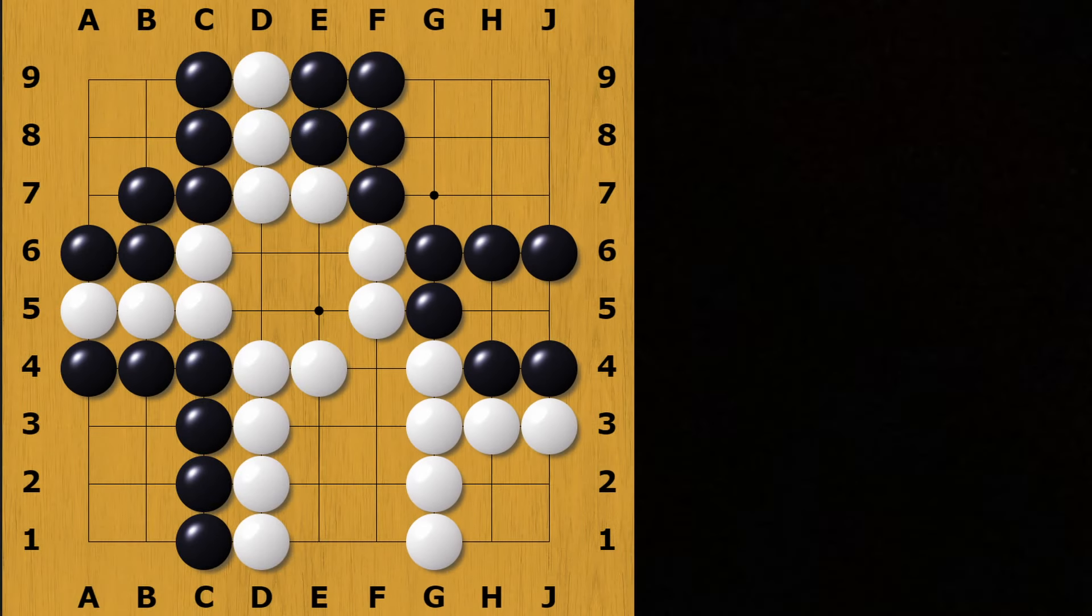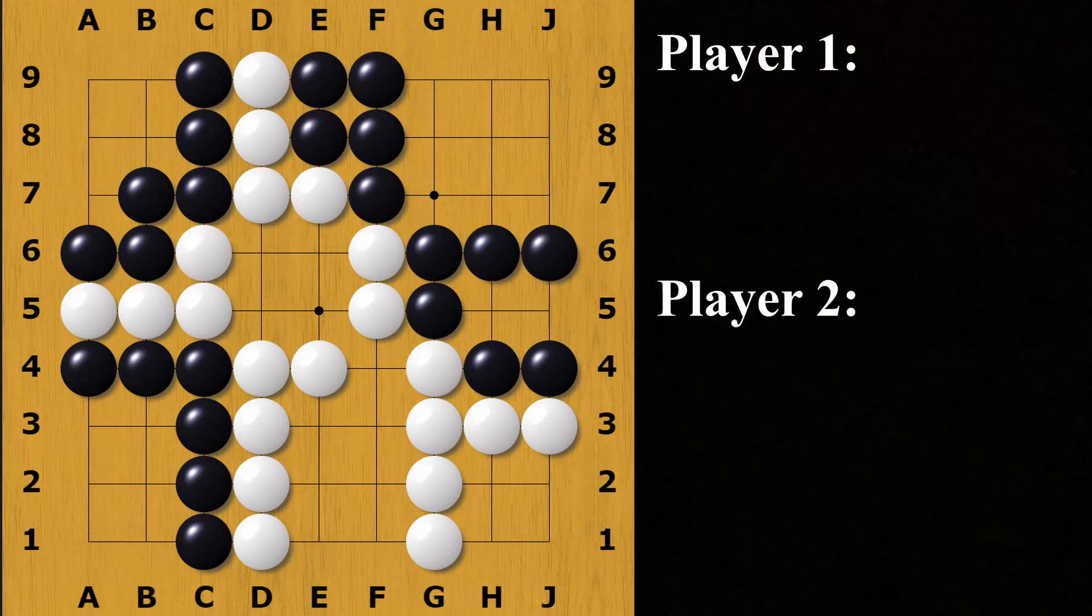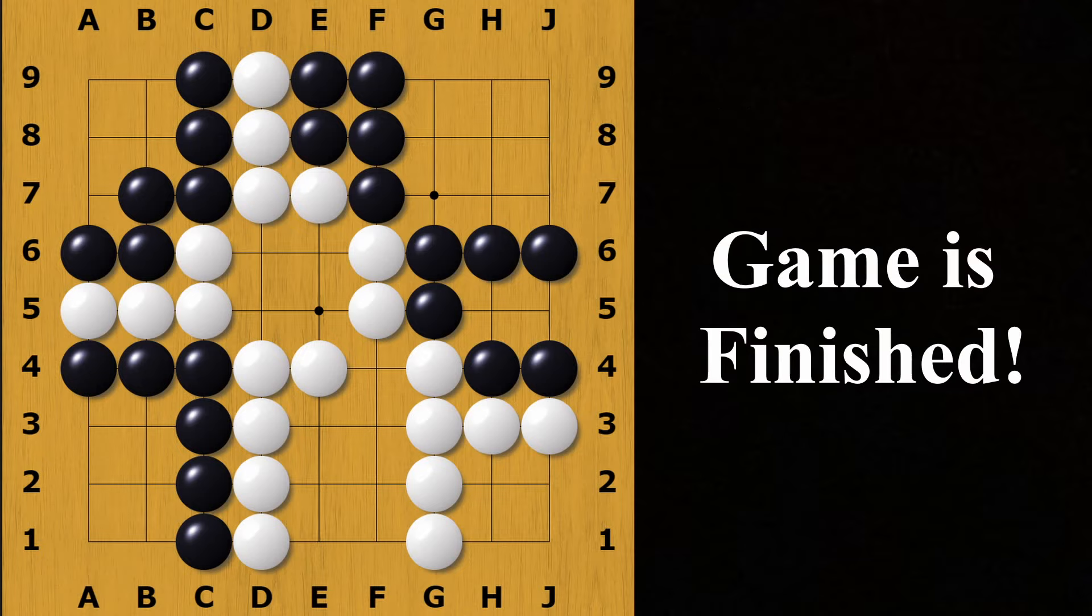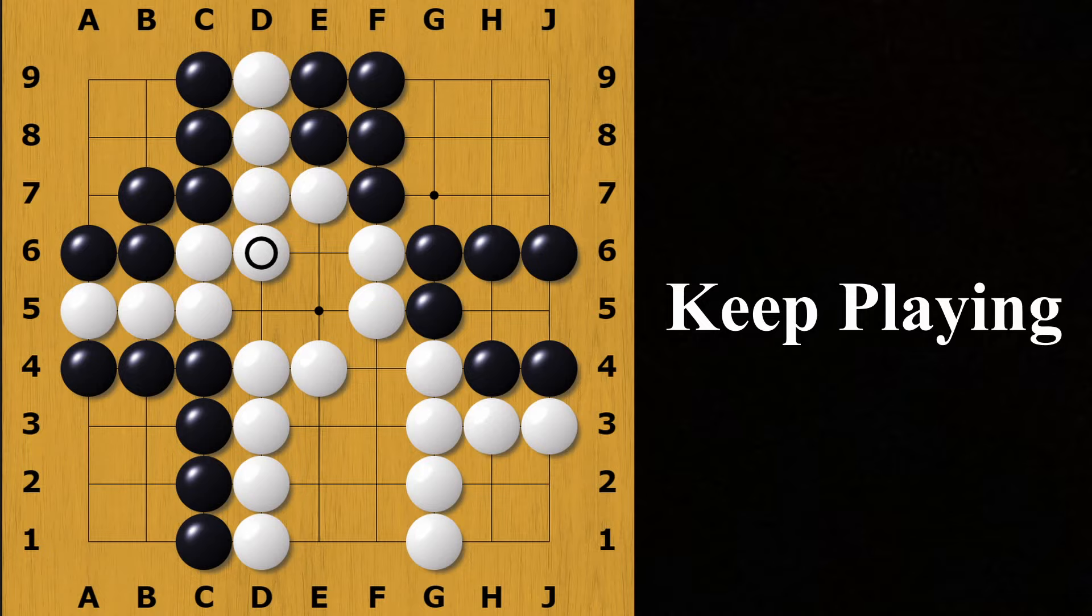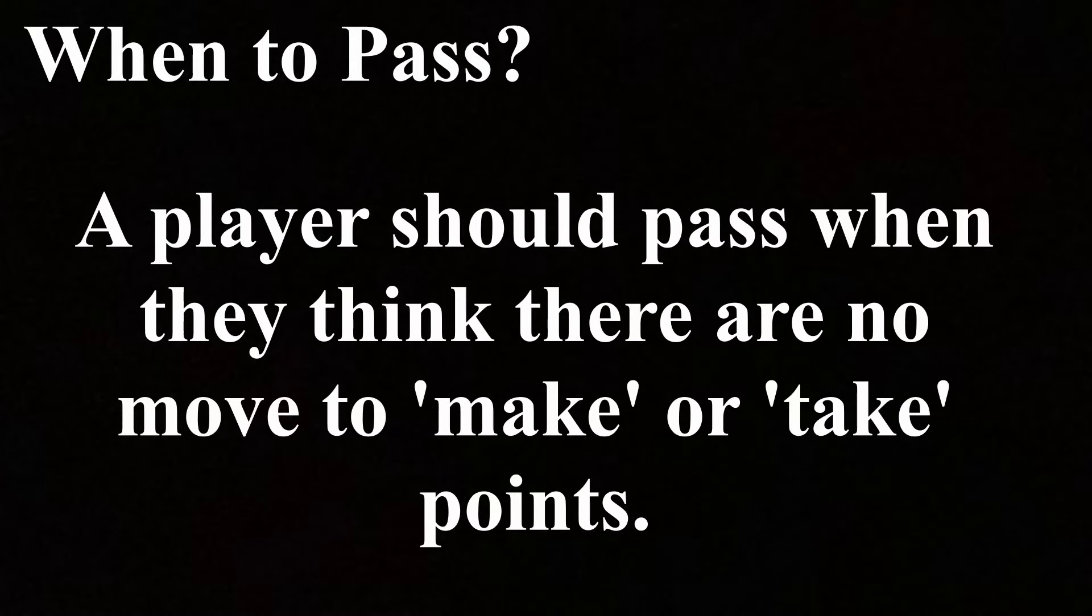Now that we know all the rules of the game, we need to talk about how to end the game. The game ends when both players pass consecutively. In other words, player 1 must declare that they are skipping their turn, and then player 2 must also pass and not play a move for the game to end. If player 2 chooses to play a move instead, the game continues.